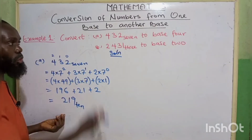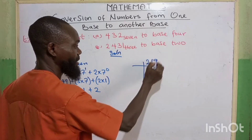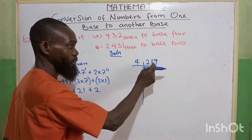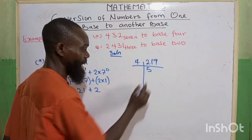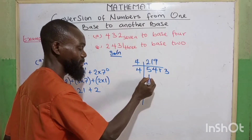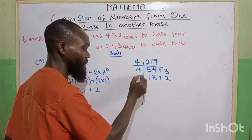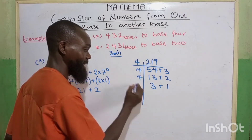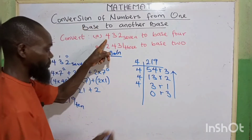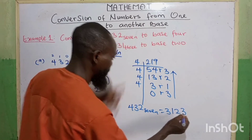Now we need to change base 10 to base 4. So we divide 219 by 4 repeatedly. 4 goes into 21, we have 5 remainder 1. 4 goes into 19, we have 4 remainder 3. 4 goes into 5, we have 1 remainder 1. 4 goes into 14, we have 3 remainder 2. 4 goes into 13, we have 3 remainder 1. 4 goes into 3, we have 0 remainder 3. Now we write the remainders from bottom up, so 432 base 7 is equal to 3 1 2 3 3 base 4.